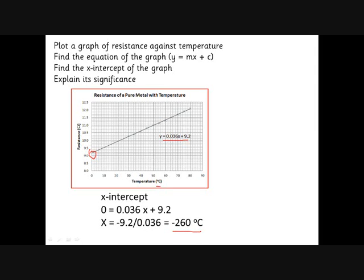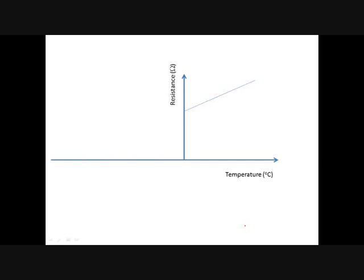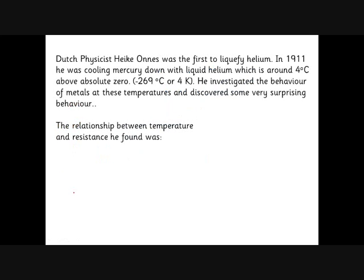Doing the maths on this data gives a temperature of minus 260 degrees Celsius, and we know the actual coldest possible temperature is minus 273 degrees Celsius — called zero Kelvin. It's not 'degrees' because it's an absolute scale, not a relative one. If we shift the axis to that point, the graph shows resistance is proportional to Kelvin temperature.